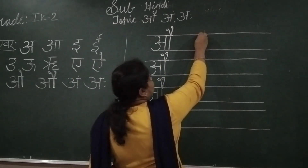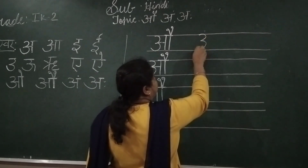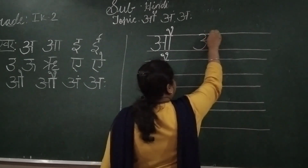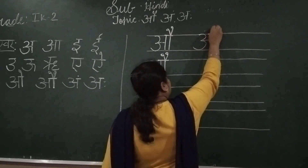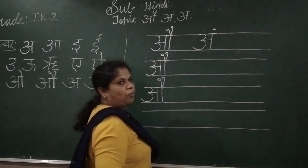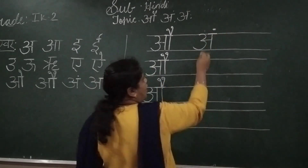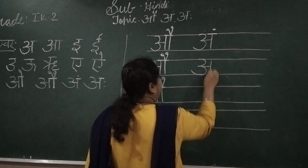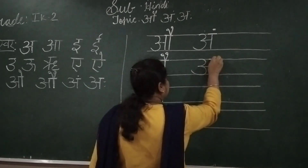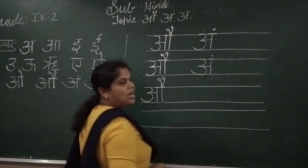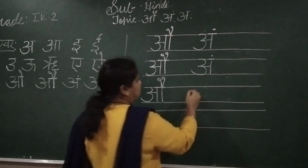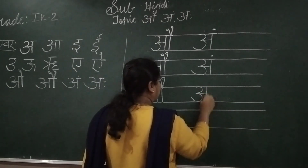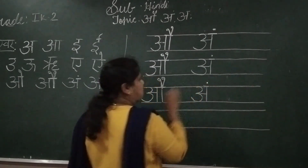Am — how do you write? Write letter Au, then one small dot on top. This is Am. Write letter Au, then one small dot on top. Am.